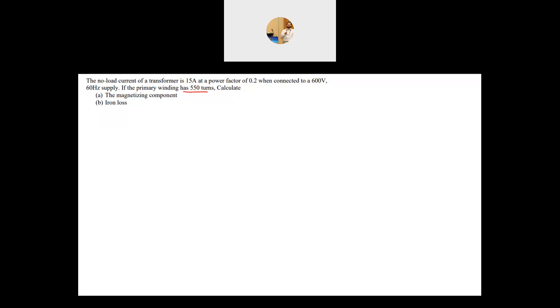The transformer model has two parts: one part represents the core and this part represents the winding. Now because the data we have is at no-load conditions, it means that the secondary is an open circuit and the current here is equal to zero. So the current that flows here is the no-load current, which is 15 amp.